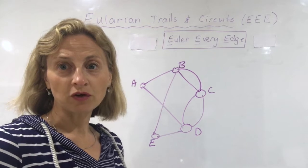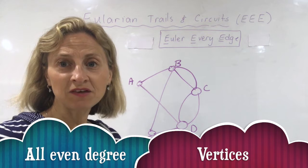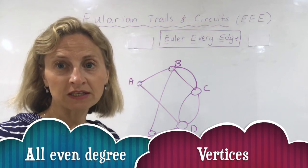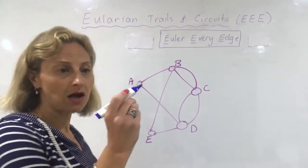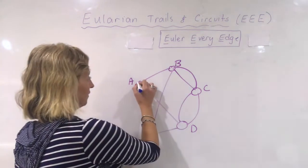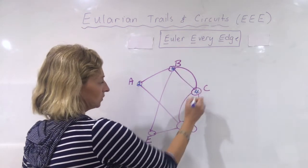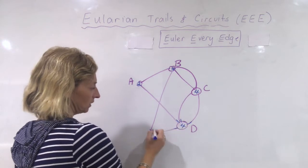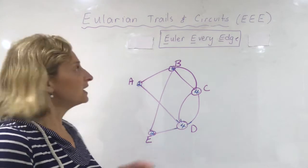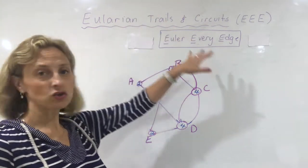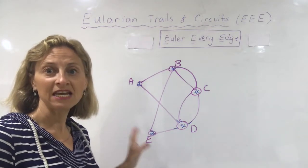Now let's do an example of the circuit. Remember, to draw an Eulerian circuit we need to have all even degree vertices. So the first thing I need to do is check the degrees of each vertex — I'll do that in blue. This one has two degrees, this one four, this one four, this one four, this one two — so they're all even. I already know that I can make an Eulerian circuit because all of my vertices have an even degree.